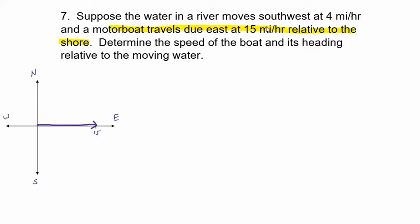Now the water in the river is moving southwest at 4 miles per hour, so let's draw that vector. When we say southwest with no angle given, it means directly between south and west — a 45-degree angle. I'm going to draw this as a length of 4. That magnitude is 4, and I'm going to want to figure out what the actual components of this water vector are.